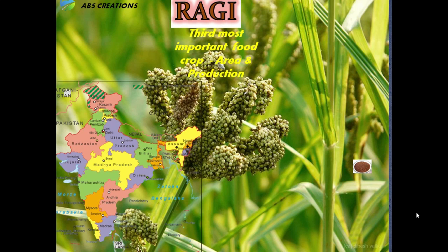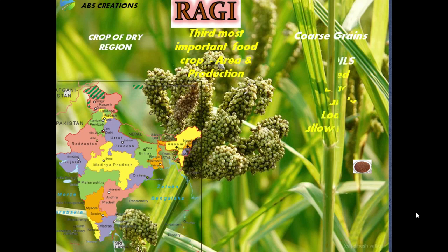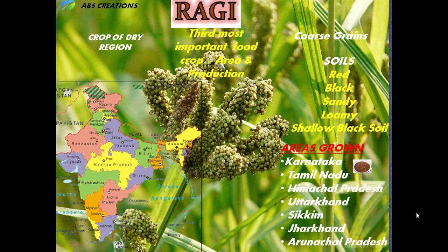The next millet is ragi. Ragi is the third most important food crop under area and production. It is also a crop of dry regions and a coarse grain. The soils used for cultivation of ragi are red soil, black soil, sandy soil, loamy soil and shallow black soil — a variety of soils. Ragi has a high nutritional value. The areas where ragi is cultivated are Karnataka, Tamil Nadu, Himachal Pradesh, Sikkim, Uttarakhand, Jharkhand and Arunachal Pradesh.